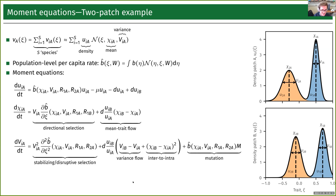For the variance equation, the first term is stabilizing or disruptive selection — the second derivative of the birth term: if negative, it implies stabilizing selection reducing variance over time; if positive, it increases variance. We then have two terms from dispersal: variance flow, where variances become more similar across patches over time, and an inter-patch to intra-patch variation term — if mean traits differ from patch to patch, that generates variation within each patch. Finally, we get a mutation term, where mutation generates new variation, increasing variance over time.